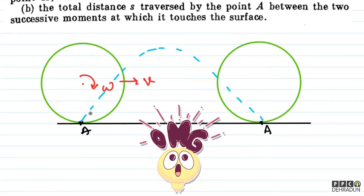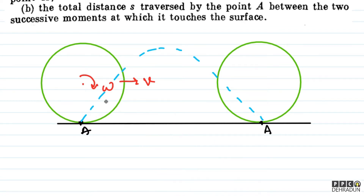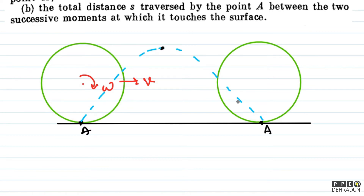We have the dashed line showing the path. The length we need to find is the distance S traveled by point A between two successive moments when it touches the surface. At one moment A is touching the ground, and then the wheel does pure rolling — A goes to the topmost point and comes back down. We need to find the length of this dashed blue line.